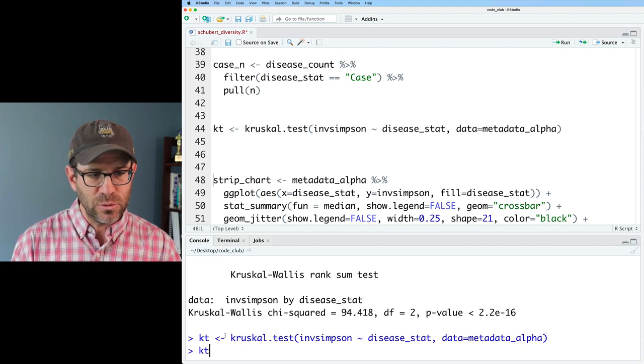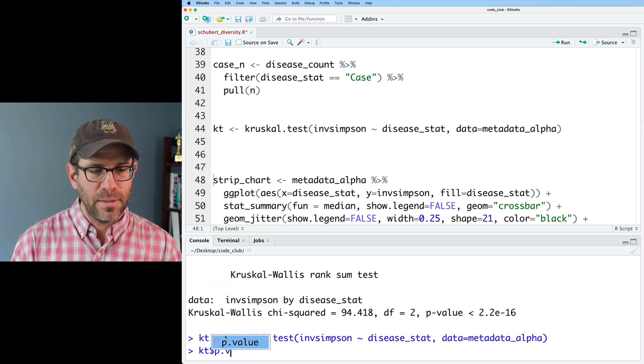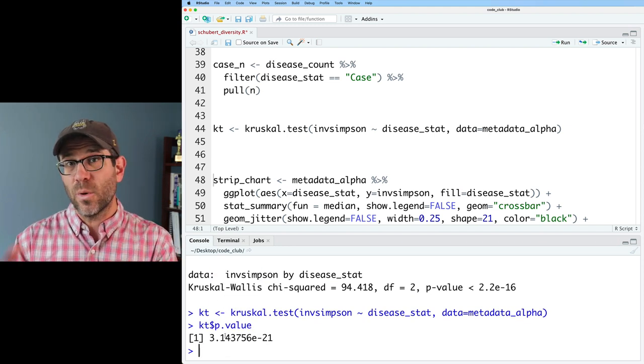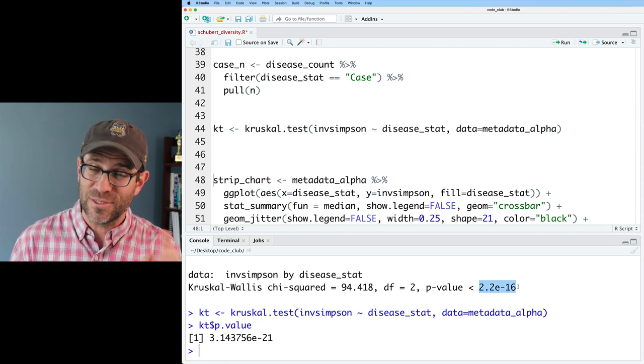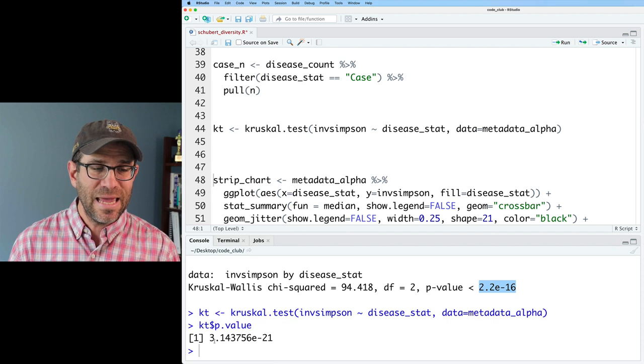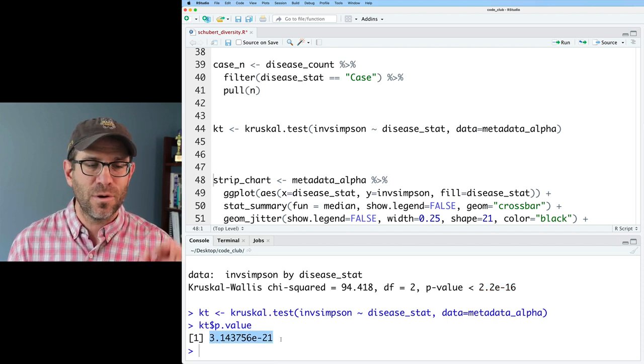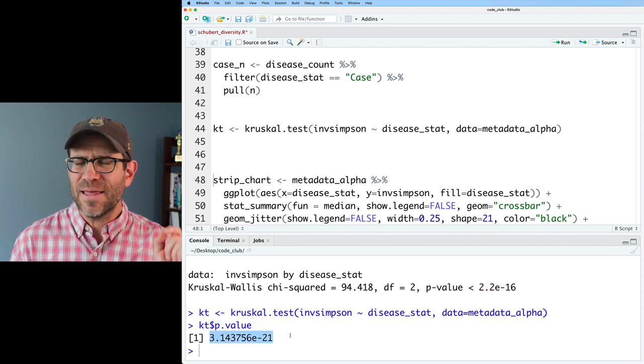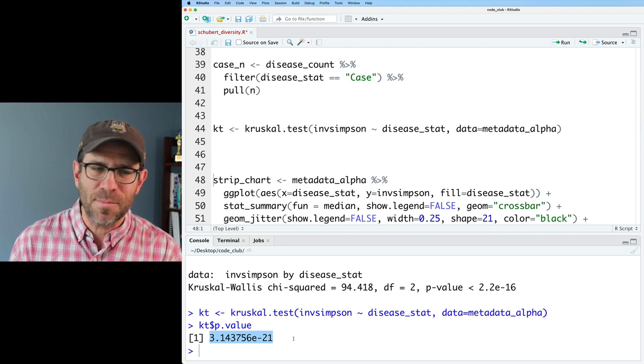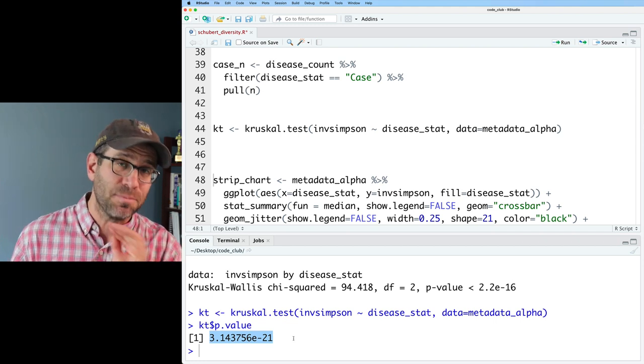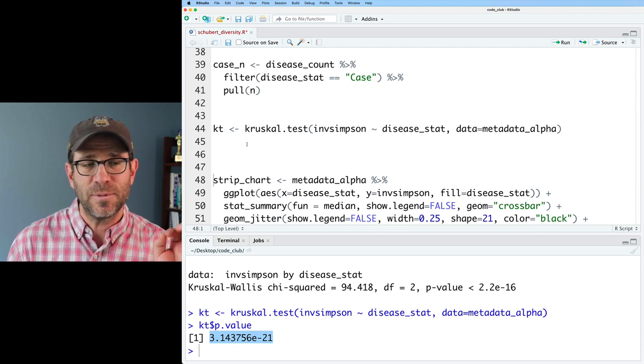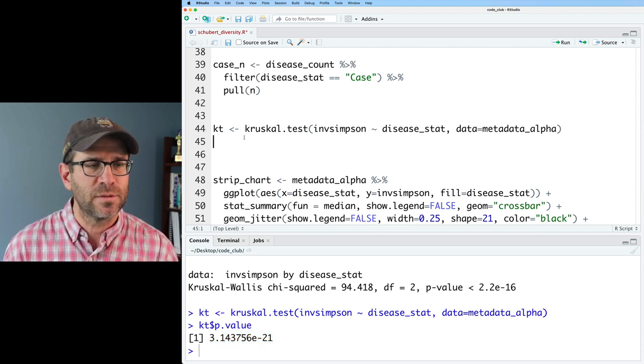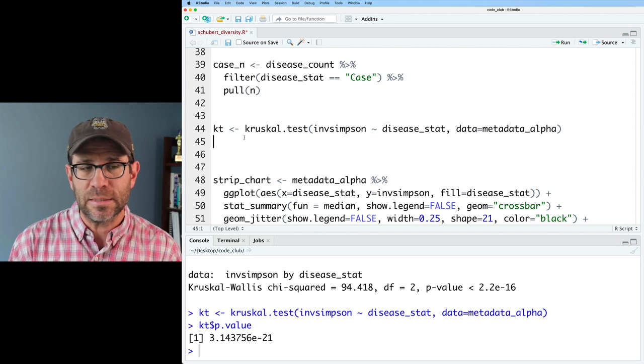One of the cool things we could do is do kt dollar sign p.value, and that will show us the actual p-value. We see it's not actually less than 2.2 times 10 to the minus 16. It's actually 3.14 times 10 to the minus 21. That might even be the smallest number that R can express. So it is small. There's no doubt that there is a statistical difference between at least one or two of those samples, one or two of the groups in the study.